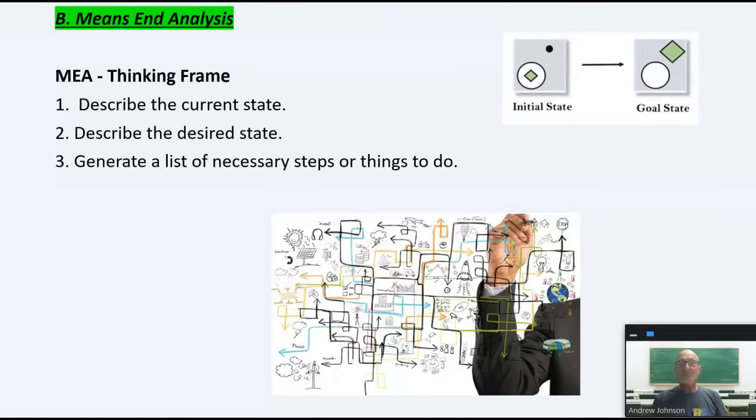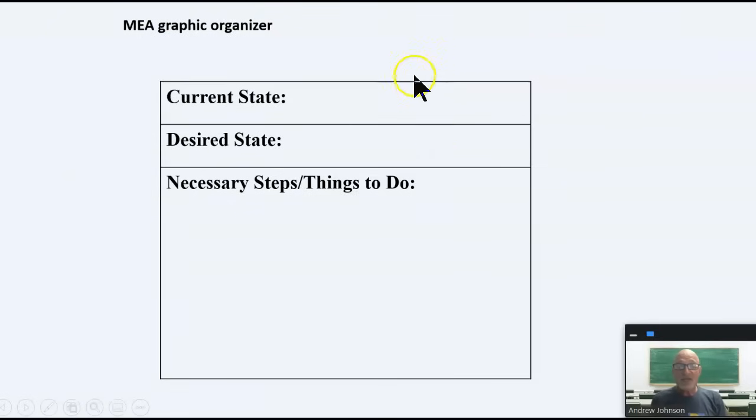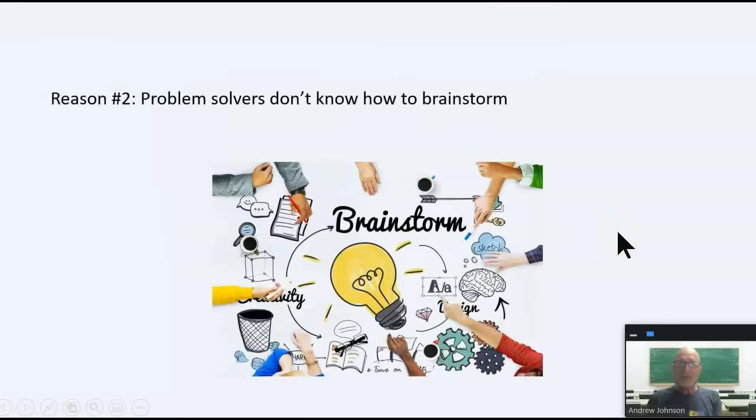The next one is means end analysis. Describe the current state. Describe the desired state. And simply generate a list of things or necessary steps to get you from one to the other. And there's our nice graphic organizer. Current, desired, things that need to be done. Simple.